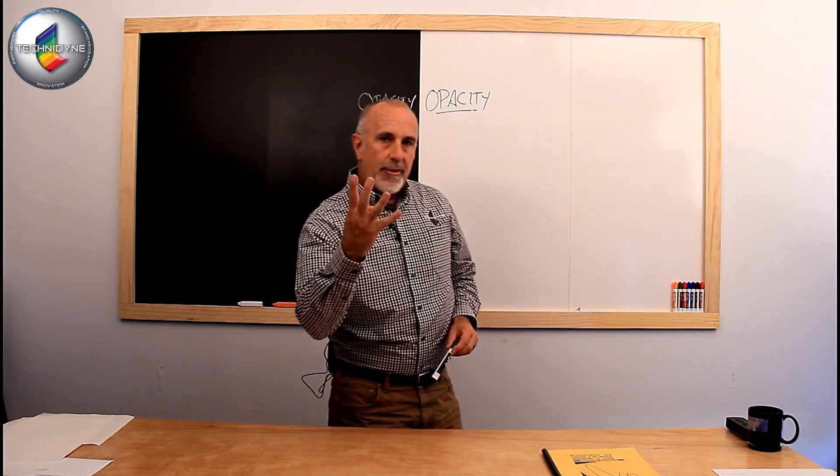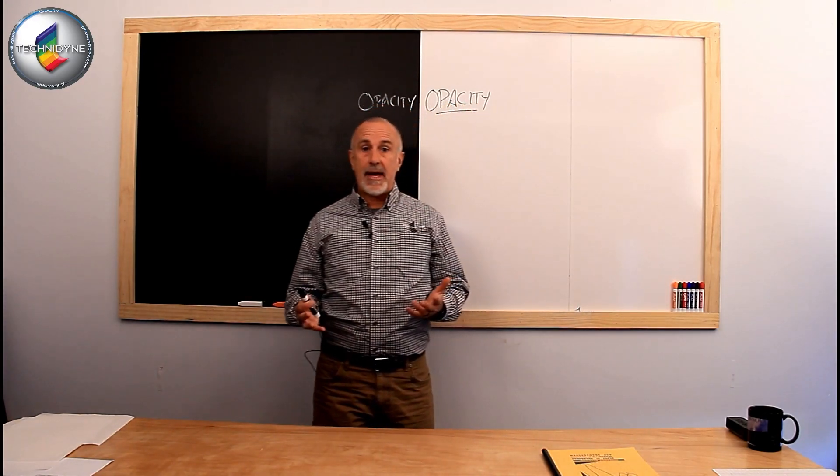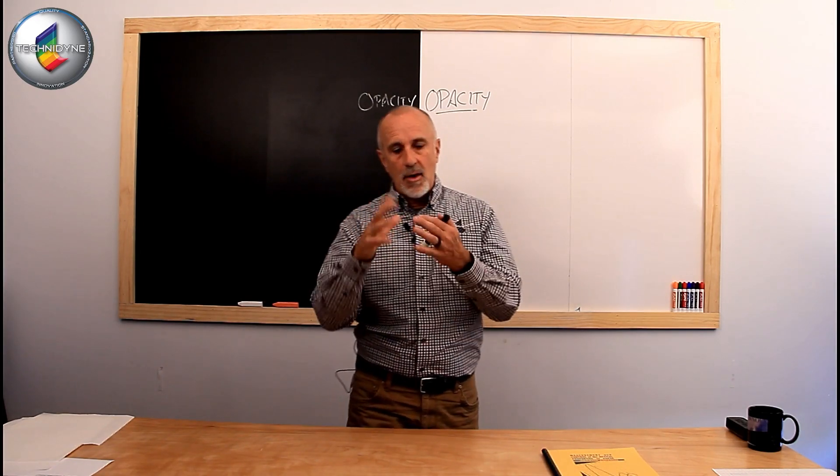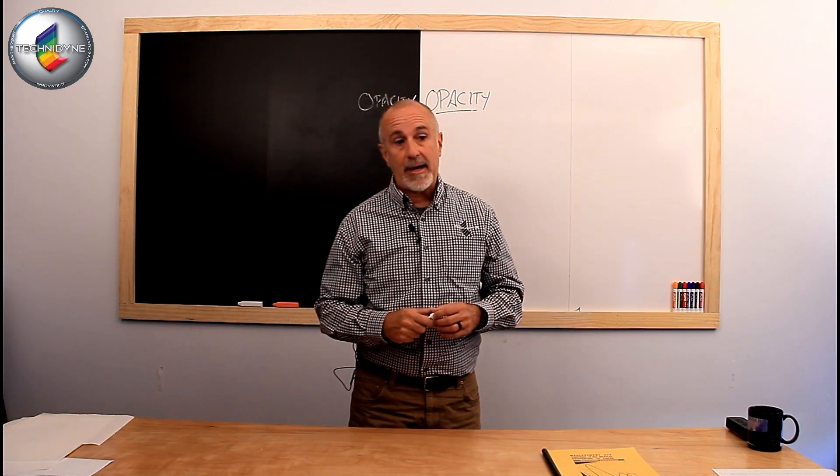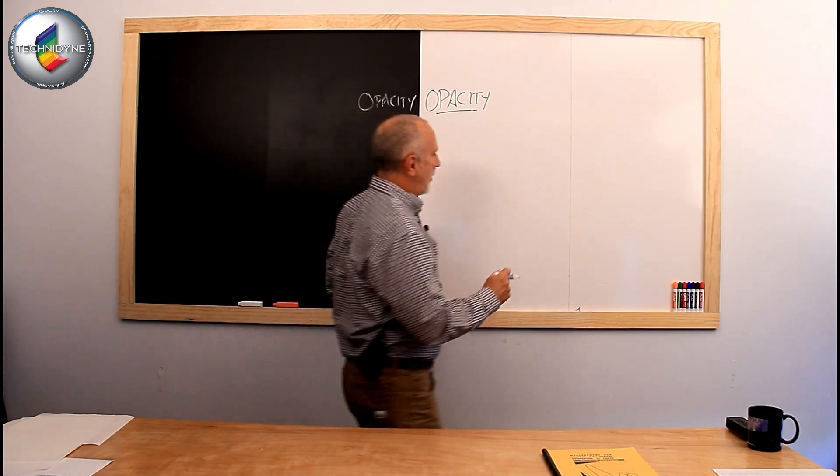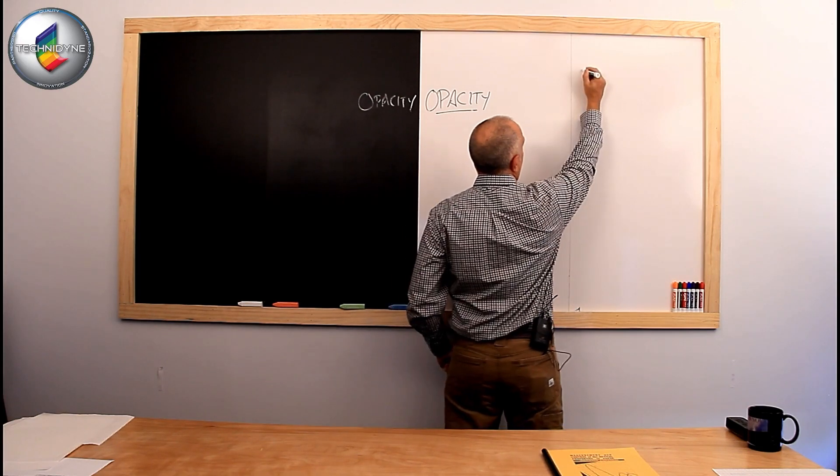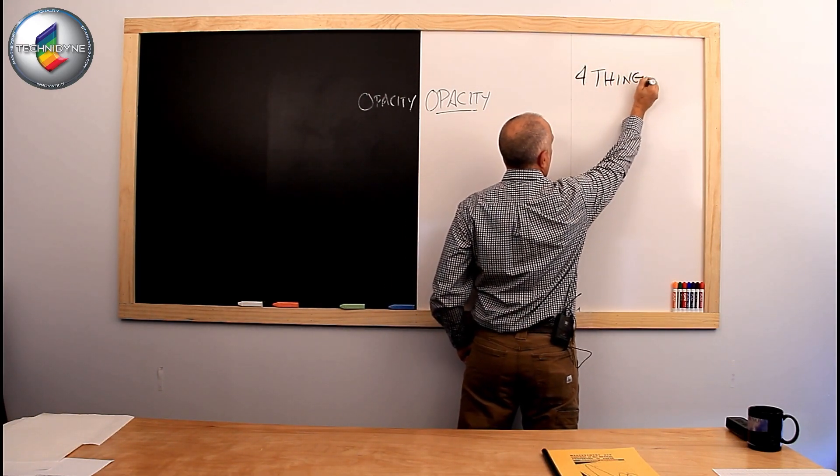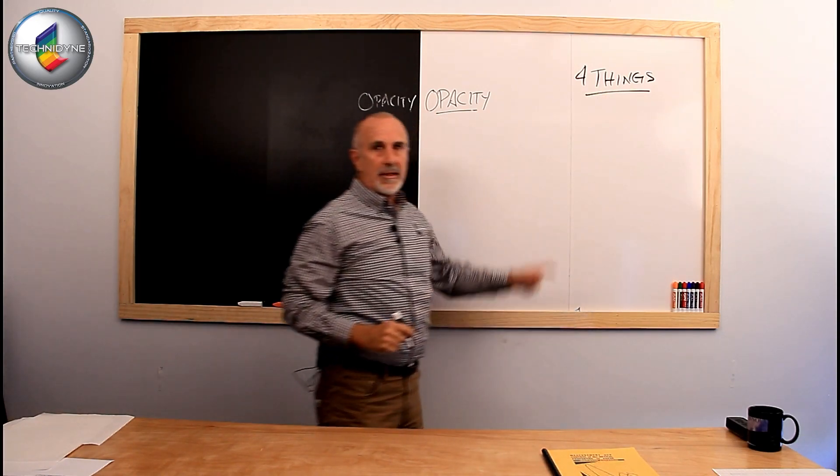So four things can and will happen to light when it strikes paper, when it strikes an object, but we're going to really kind of hone it in on paper and flexible packaging. So four things that can and will affect it. Let's just work over here. All right, so four things. You can see that. Good deal.